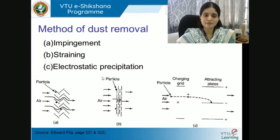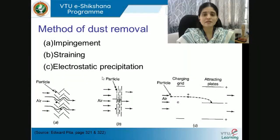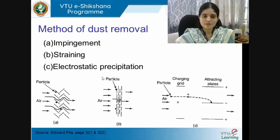To summarize: impingement means the impurity gets stuck to the filtering media; straining means the impurity remains on the outside of the filtering media and does not enter the AC system as air moves through to the evaporator; electrostatic precipitation uses charged air particles and electrostatic fields to arrest impurities.